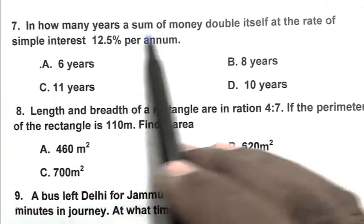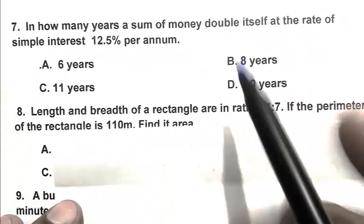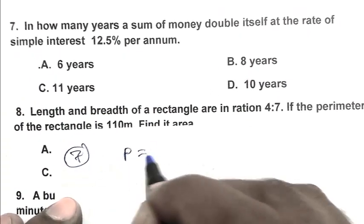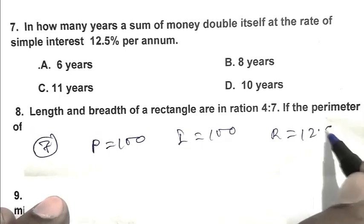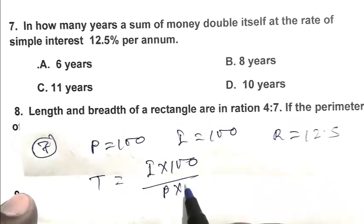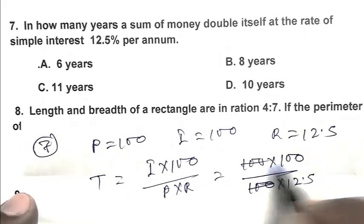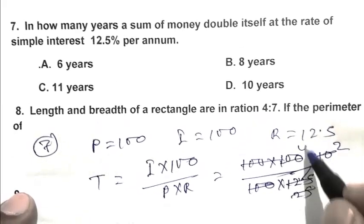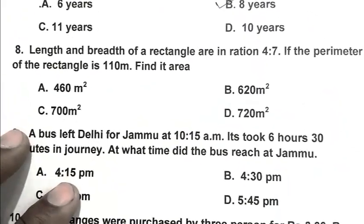Question number 7. In how many years is some money double itself at the rate of simple interest 12.5 per annum? So friend, when a amount double itself its interest and principal become same. So friend, let us take principal as 100. So interest also 100 and rate that is 12.5. So friend, time that is I multiplied by 100 by P multiplied by R that is 100 multiplied by 100 upon 100 multiplied by 12.5. That is 8 years. So friend B is the right answer.